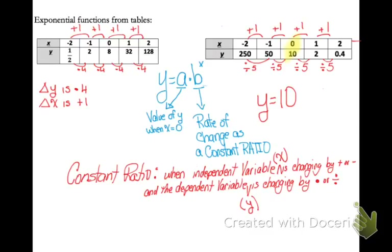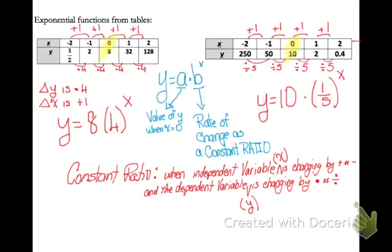I'll show you how you could easily write the equation for each table. For the table on the right, I know that my y value when x is 0 is 10, so that's my a value. And my rate of change is times one-fifth, raised to the x power. For the table on the left, y is 8 when x is 0 — that's my a value — and my b, my rate of change, is times 4 raised to the x power. When looking at a table to determine if it is exponential, find out if your y values are going up by multiplication or down by division — that means it's exponential.